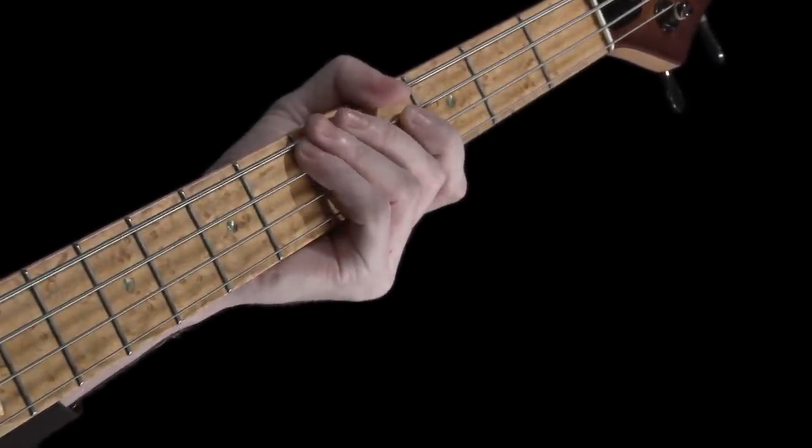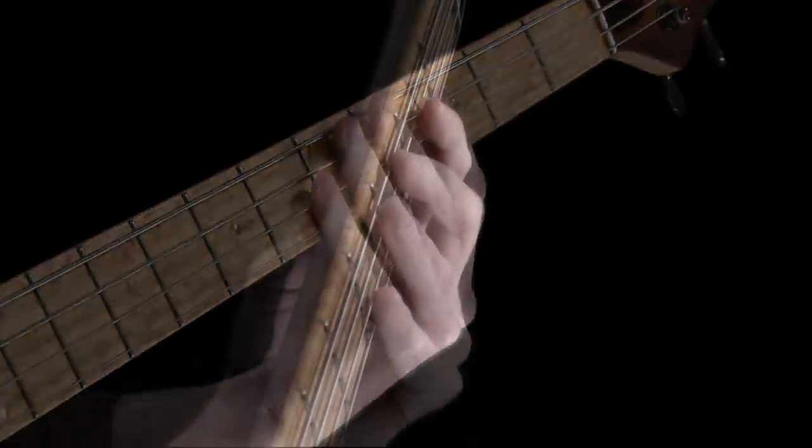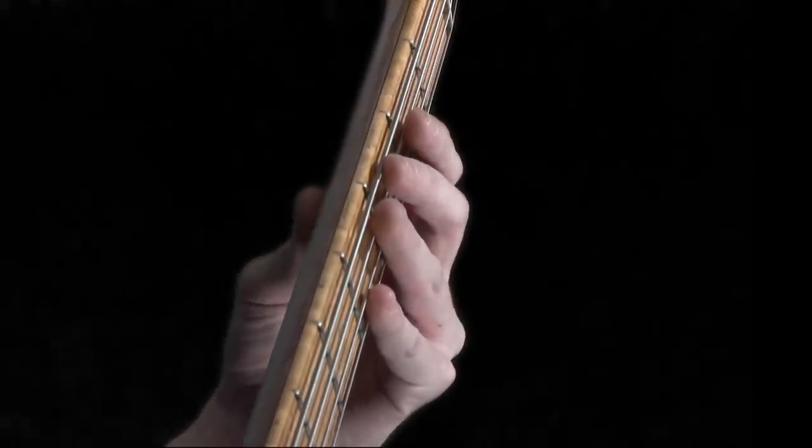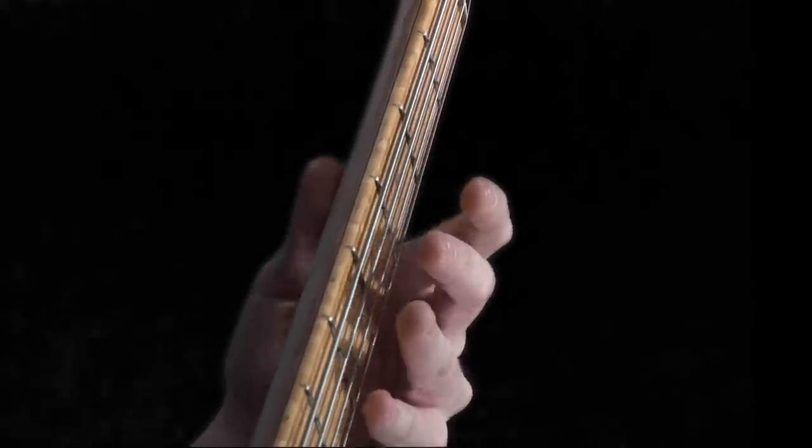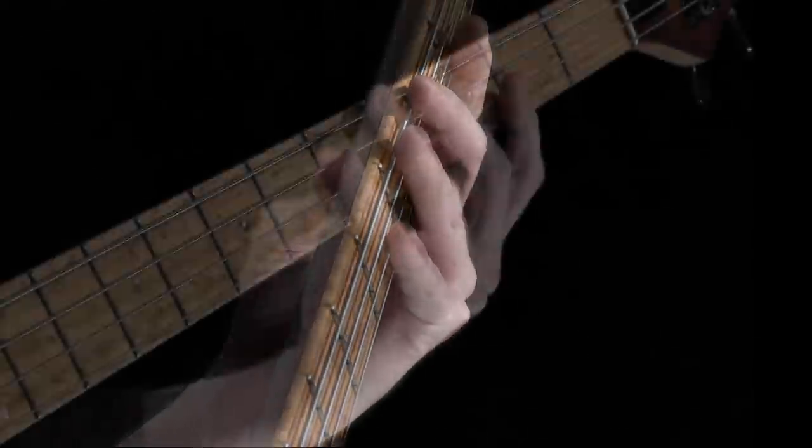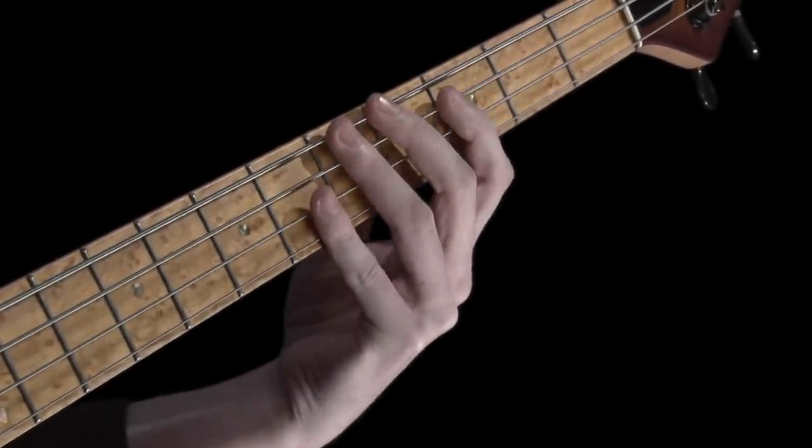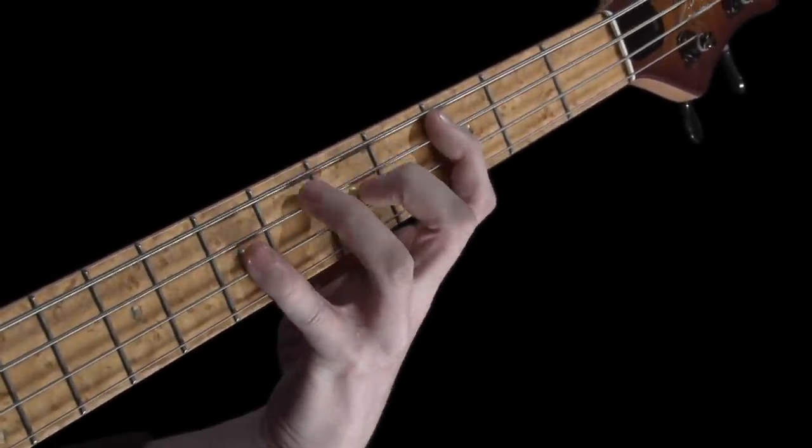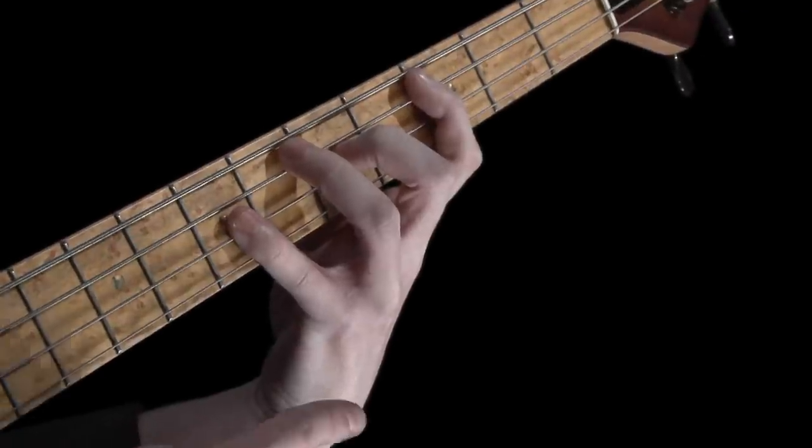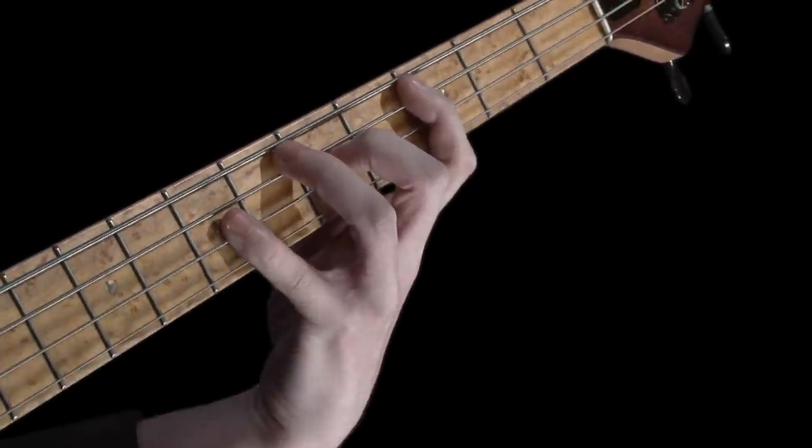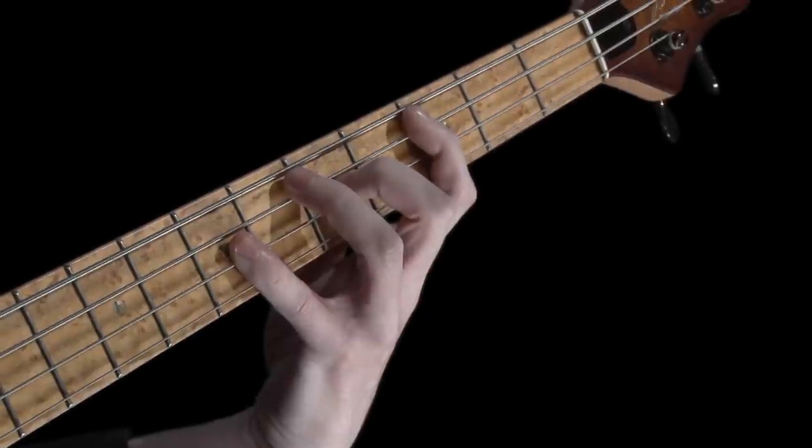In a very similar way to our plucking hand, see how I use my thumb to anchor the relaxed hand shape on the neck. This allows us to pivot the hand either up or down the length of the fingerboard without us having to reach with the fingers. I hope you can see that by overreaching with the fingers we'd introduce more tension into the fretting hand, which is something that we should always try to avoid where possible.